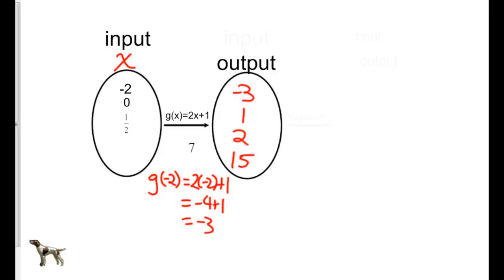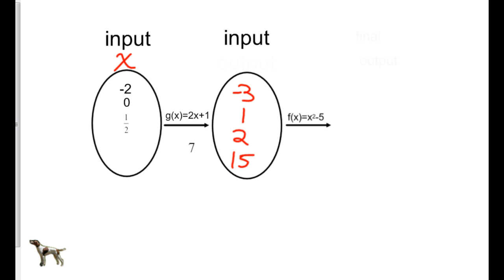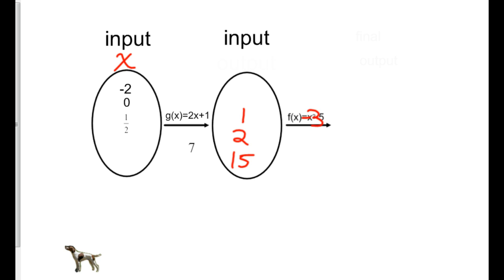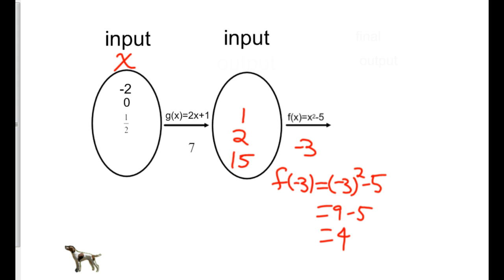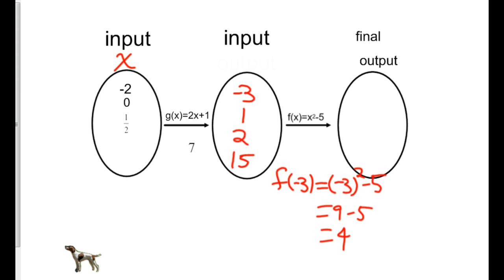This new bag of numbers is my output. But couldn't I take this output bag and make it an input bag for a new function? Say, f of x equals x squared minus 5. Instead of plugging these values into the old equation, I'm going to take each of these values — negative 3, 1, 2, and 15 — and plug them into f of x. If I plug negative 3 in for x, that says f at negative 3 equals — don't forget parentheses — negative 3 squared minus 5, which would be 9 minus 5, is 4. So my output when x is negative 3 is f of negative 3 equals 4, so y is 4.